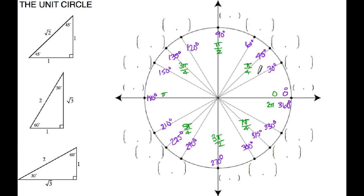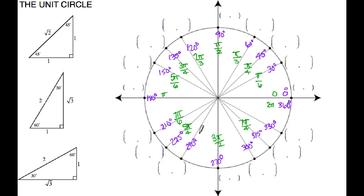30 degrees is equivalent to pi over 6 in radians, so every 30 degrees is an increment of pi over 6. Counting around: pi over 6, 2 pi over 6 which reduces to pi over 3, 3 pi over 6 which reduces, 4 pi over 6 which reduces to 2 pi over 3, 5 pi over 6, 6 pi over 6 which reduces, 7 pi over 6, 8 pi over 6 which reduces, 9 pi over 6, 10 pi over 6 which reduces, and finally 11 pi over 6. I just like to count around the unit circle — I find that to be the easiest way to deal with the radians.